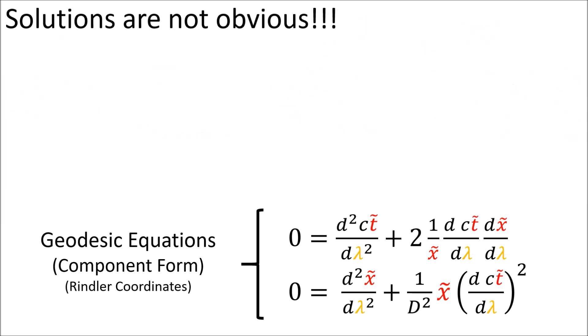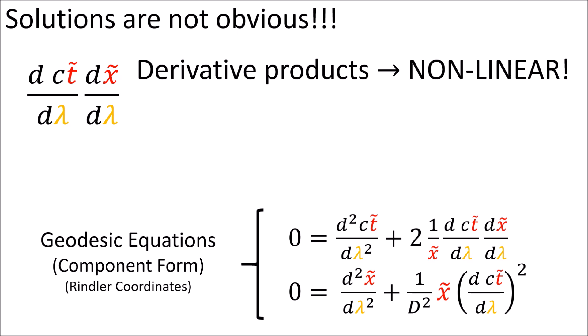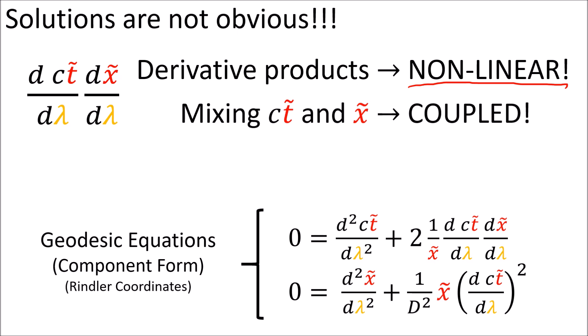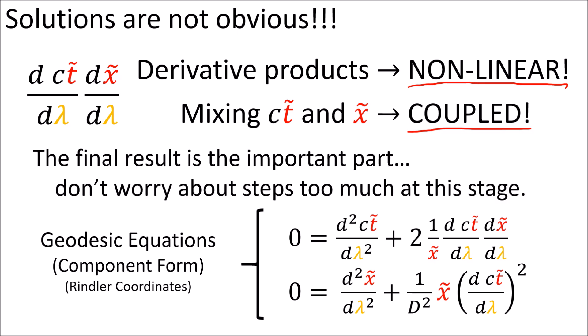The solutions to these differential equations are definitely not obvious. We have a product of the ct and x derivatives, so these equations are non-linear. Also, the ct and x variables are mixed together in both equations, meaning these differential equations are coupled. Both of these facts make it very frustrating to solve for ct and x. The solution involves a lot of clever tricks from course notes and online articles, so the steps will seem a bit strange — but the final result is the important part.